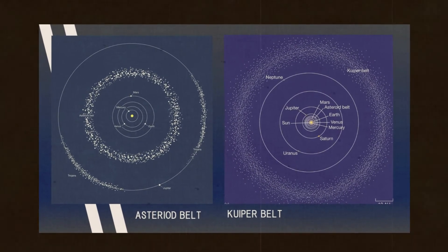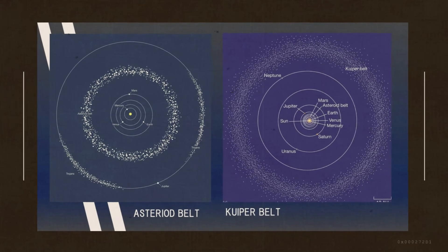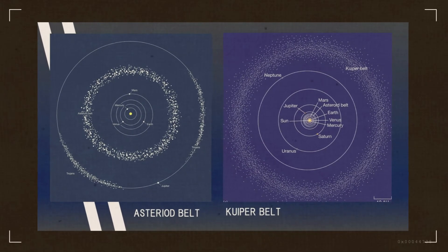Beyond the gas giant Neptune lies a region of space filled with icy bodies, known as the Kuiper Belt. This region spans and holds trillions of remnants of the early solar system.